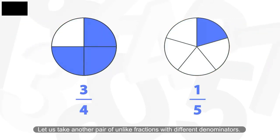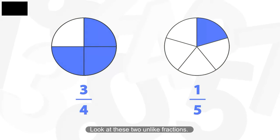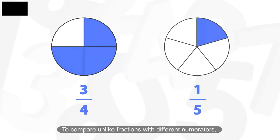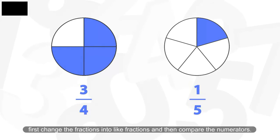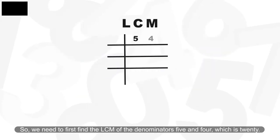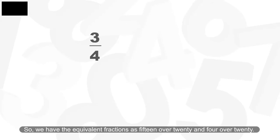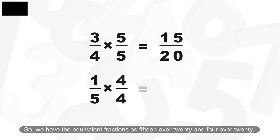Let us take another pair of unlike fractions with different denominators. Look at these two unlike fractions. They both have different numerators and denominators. To compare unlike fractions with different numerators, first change the fractions into like fractions and then compare the numerators. So we need to first find the LCM of the denominators 5 and 4, which is 20. Now change the fractions to equivalent fractions with the denominator 20. So we have the equivalent fractions as 15 over 20 and 4 over 20.